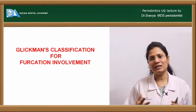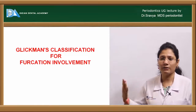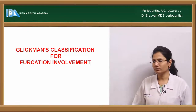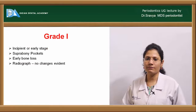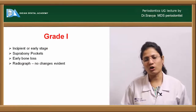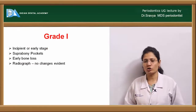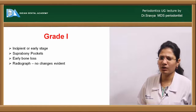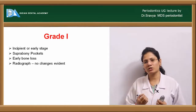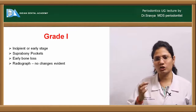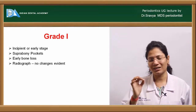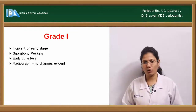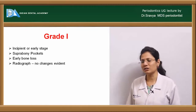Glickman has classified furcation involvement into different grades depending primarily on the horizontal component of bone loss. Grade one is an incipient or early lesion where the furcation is minimally involved, reaching only the entrance of the furcation. No radiographic changes are appreciated at this stage.